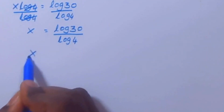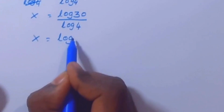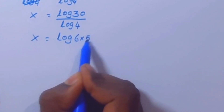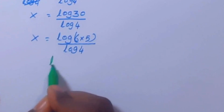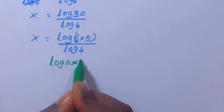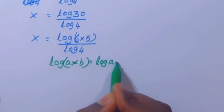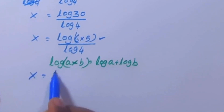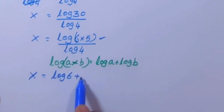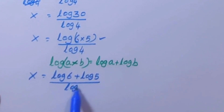Now x equal to log 30, and log 30 can be written as log of 6 times 5. Using the formula log a b equal to log a plus log b, we get x equal to log 6 plus log 5, all divided by log 4.